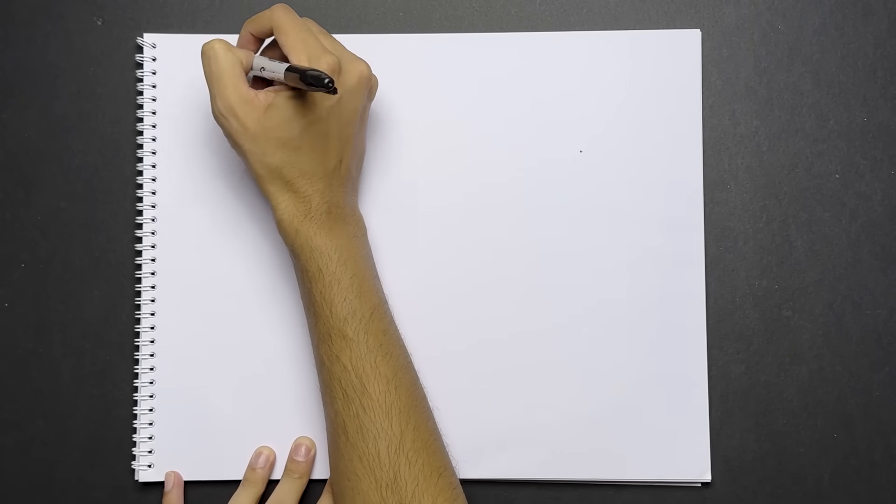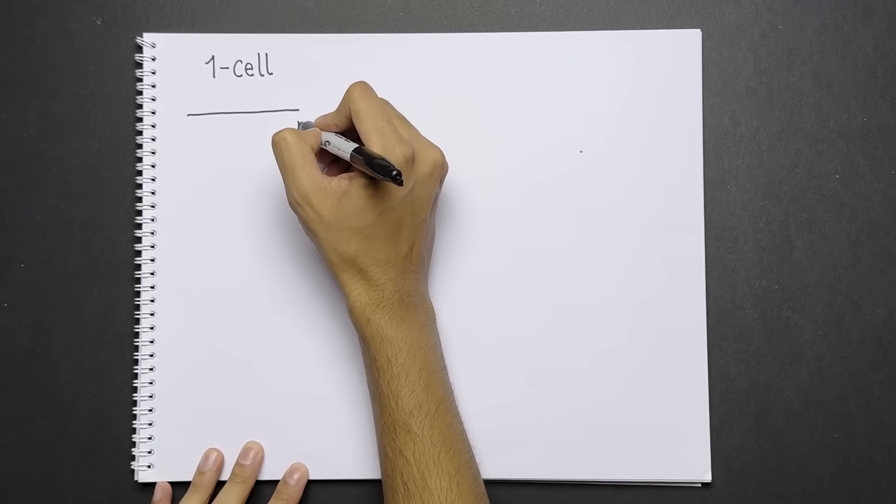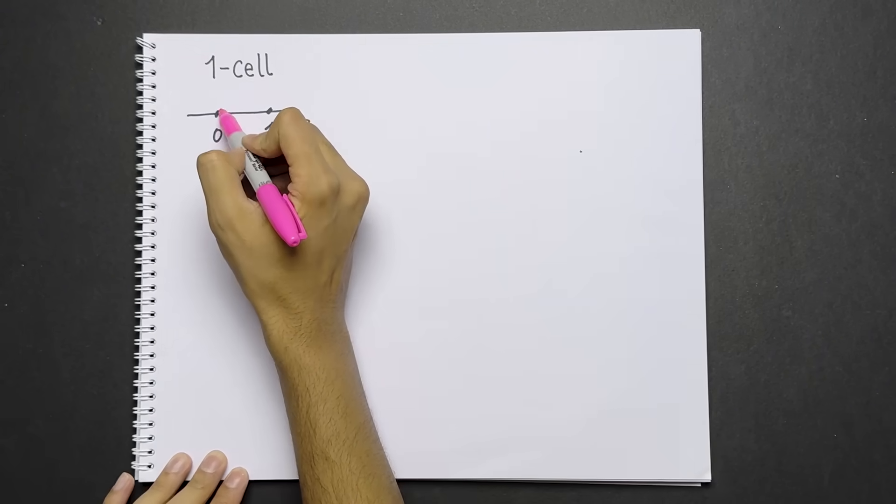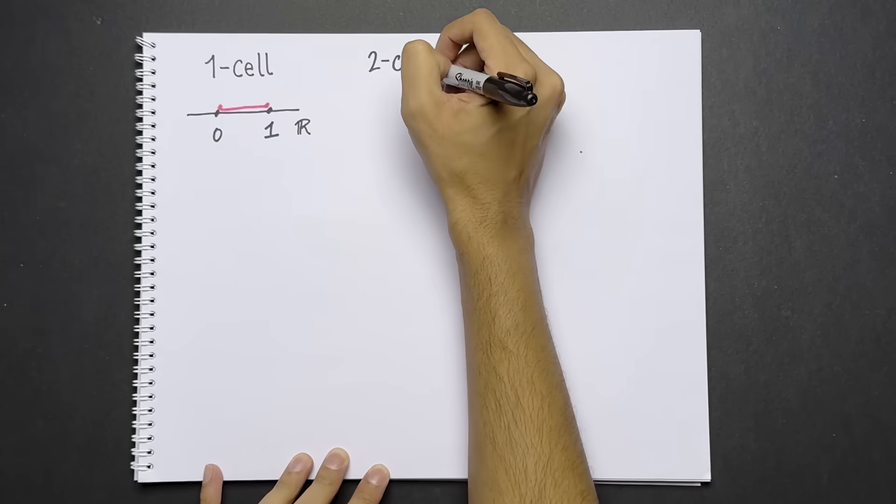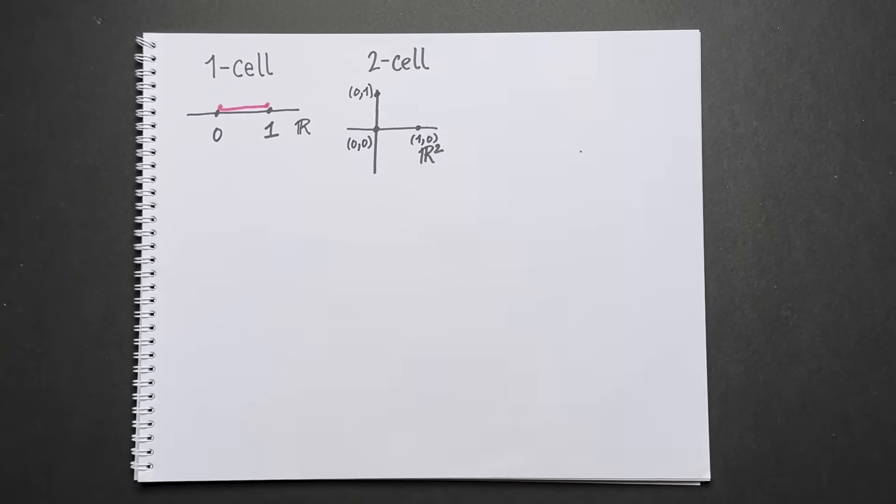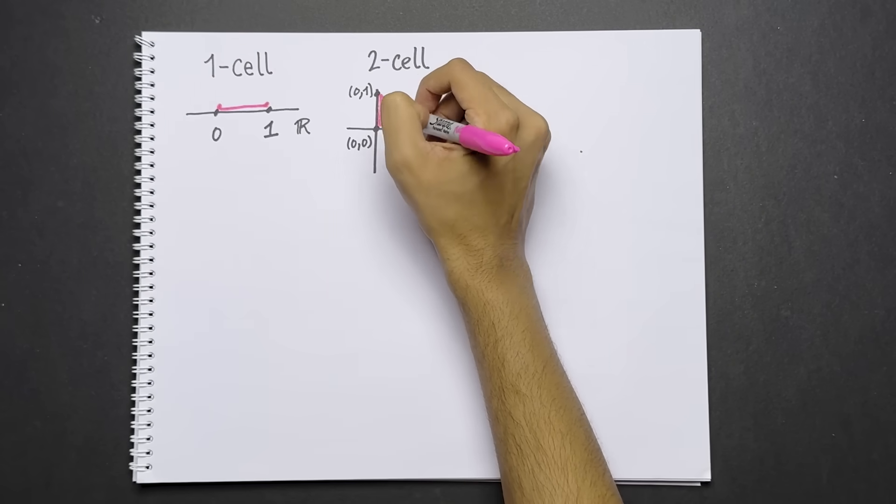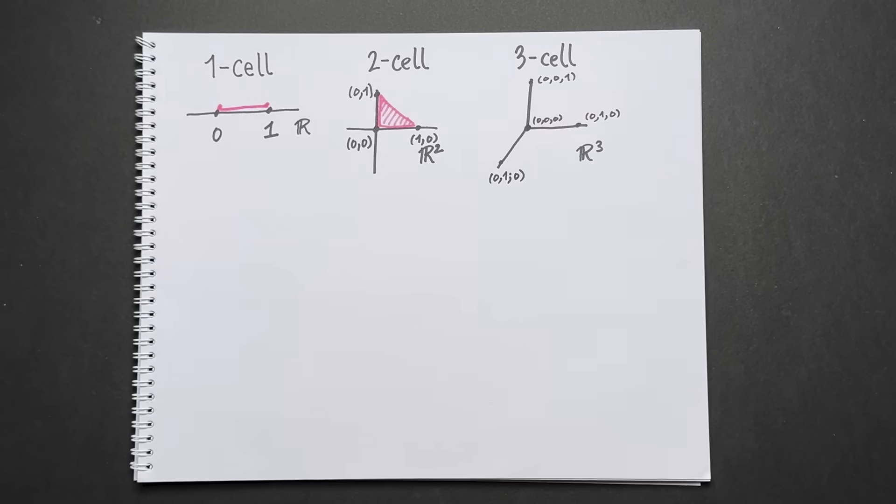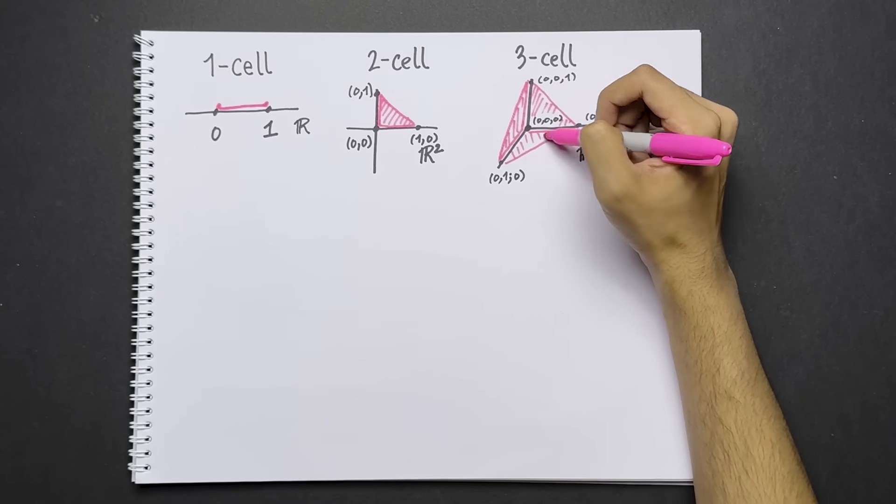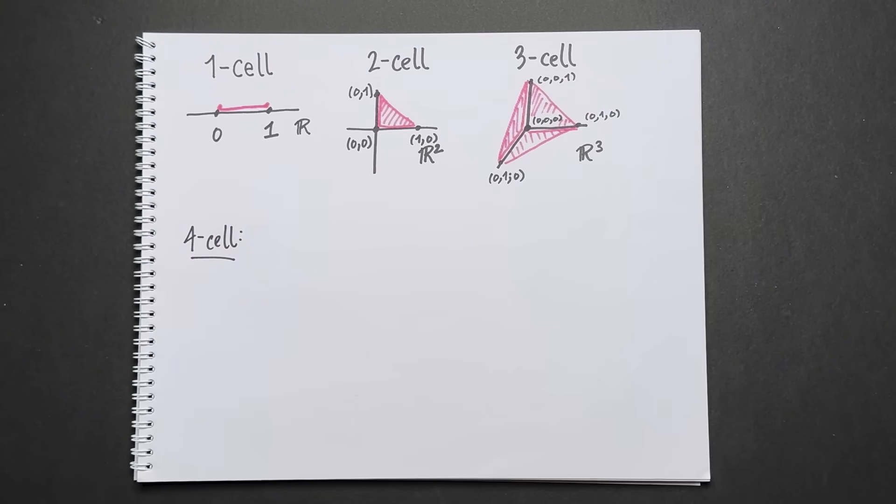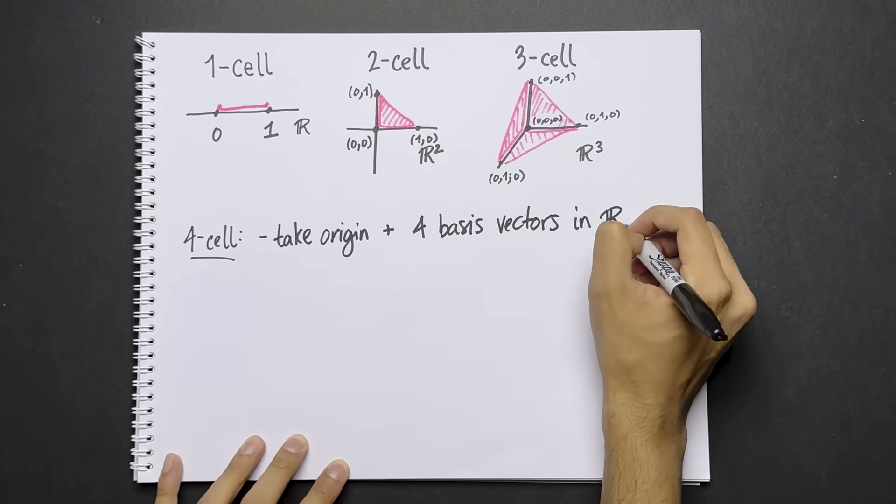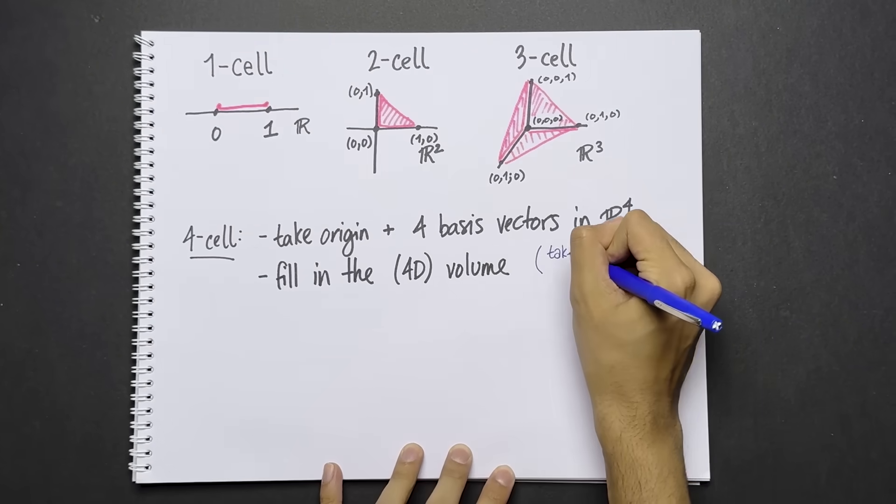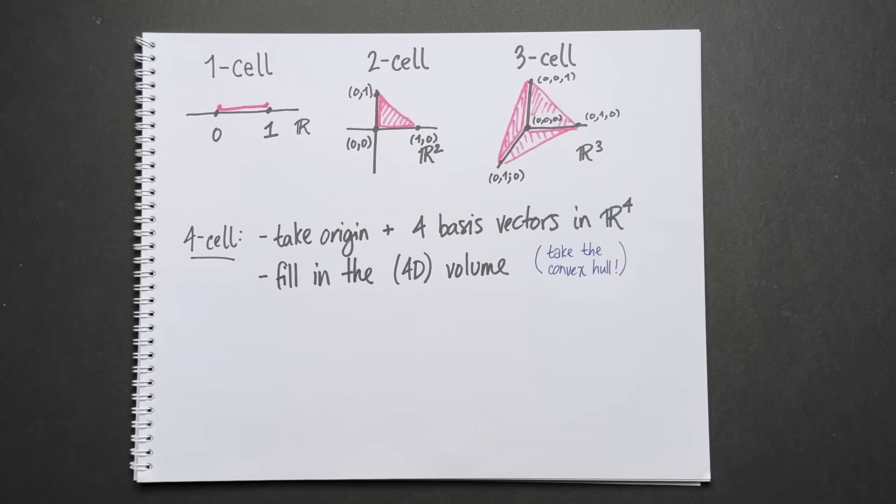Given these examples, we can define homology in general. First, we can take our definitions of cells and make them work in any dimension. Let's define them precisely. For a one cell, consider the real number line. Take the origin, zero, and the number one. Fill in the points between them. That line is a one cell. For a two cell, consider R2. We take the origin and the two basis vectors. Then fill in the triangle determined by these three points. That shape is a two cell. Now for a three cell, consider R3. We take four points in three-dimensional space, the origin and the three basis vectors. Then fill in the volume and we get a three cell. Notice that this is a tetrahedron with the inside filled in. To make a four cell, we can continue the pattern, even though we can't visualize it. We take the origin and four basis vectors in R4. Then we fill in the four-dimensional volume. Precisely, you take the convex hull of those points, if you're familiar with that term. In general, for an n cell, we take the origin and n basis vectors in Rn. Then we fill in the n-dimensional volume determined by those points.